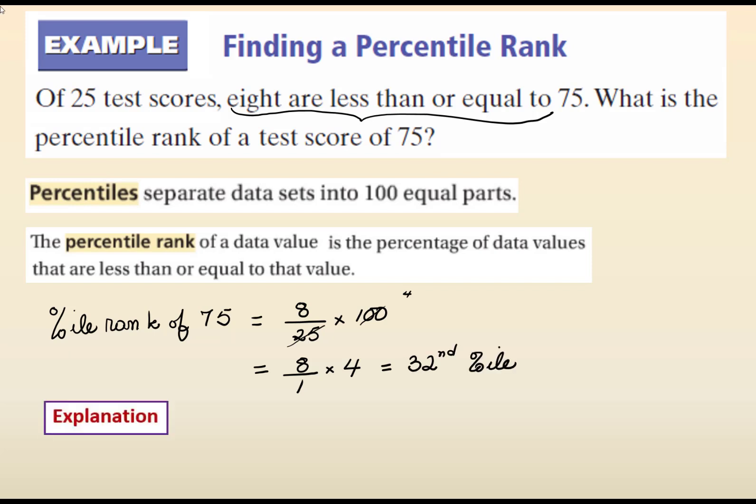So, the percentile rank of 75 is 32. 75 is the 32nd percentile. What does that mean? It means that 32% of the data is 75 or less, and 68% of the data is above 75.